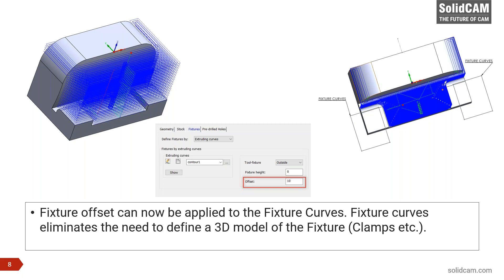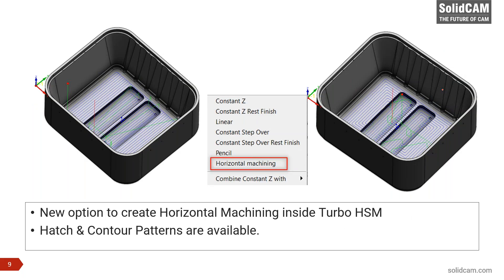Another important release in Turbo machining is horizontal machining inside Turbo HSM. Previously, Turbo HSM had constant Z, linear, constant cusp, and rest machining options. Now we have added horizontal machining, which helps you machine absolutely planar surfaces using an end mill or a ball nose tool. This option is now available inside Turbo HSM.